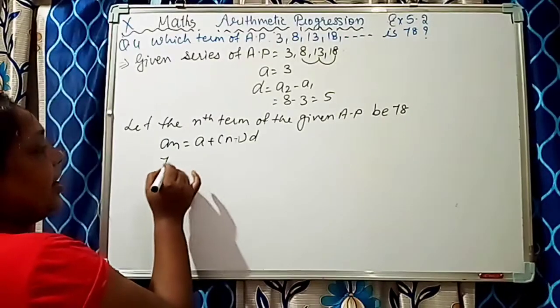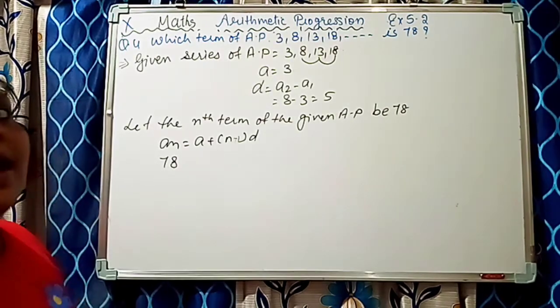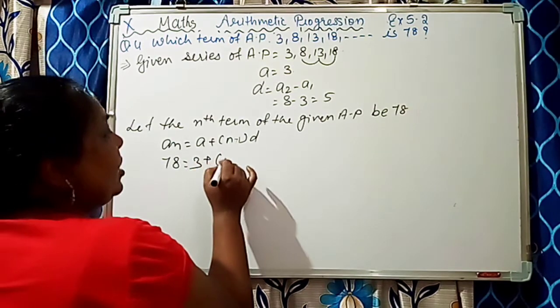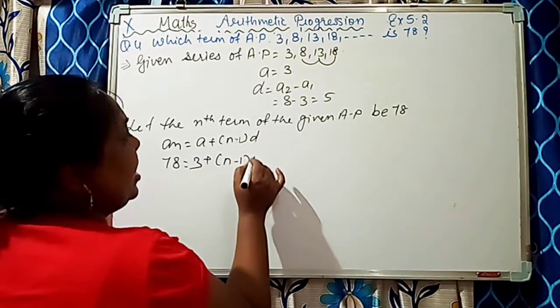So what is our AN? 78. What is our A? 3. N minus 1 we don't know and D is 5.